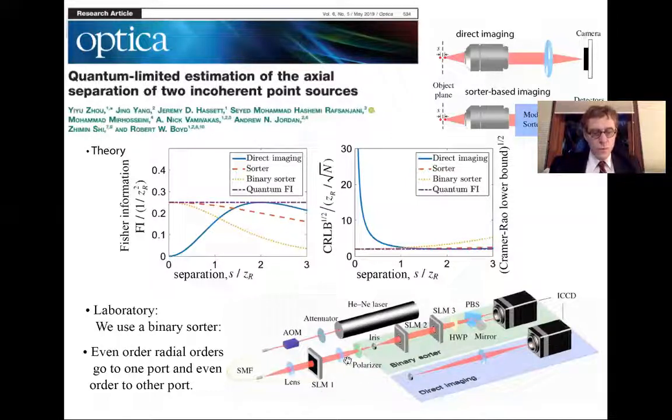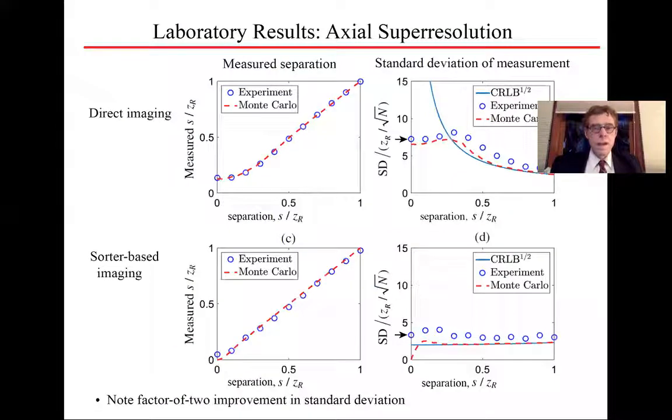We form the object here. We use a spatial light modulator to synthesize a star, a source with thermal statistics. And the two of them are mutually incoherent with respect to one another. We can measure this object by two different ways. We have the direct imaging method, which we can slide in and out. And we have the binary sorter that we can slide in and out. And we use the spatial light modulators to impress holograms to diffract a certain mode into a certain direction.